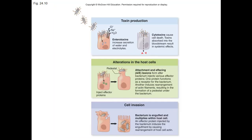Moving to bacterial infections in the lower digestive system: one in three children dies from diarrheal diseases in the developing world, and most of these are infants. The lower digestive system diseases have similar symptoms: diarrhea, loss of appetite, nausea, vomiting, and sometimes fever. Gastroenteritis is the acute inflammation of the stomach and intestines often accompanied by nausea, vomiting, diarrhea, and abdominal pain.